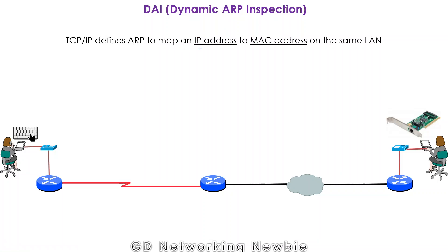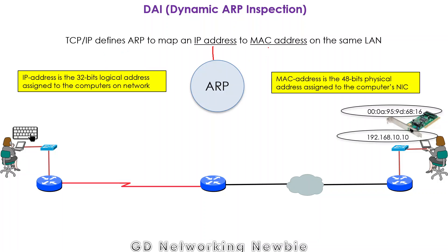The Address Resolution Protocol is a protocol which maps an IP address to the MAC address. The IP address is a 32-bit logical address and the MAC address is a 48-bit physical address. This protocol helps us find out the MAC address if we have the IP address. For example, a user configured with an IP address and a default gateway needs to know the MAC address of that gateway router to send data.